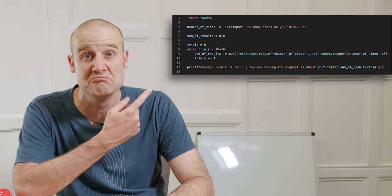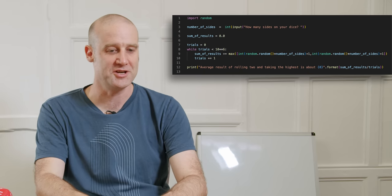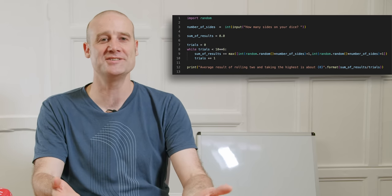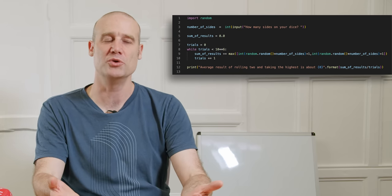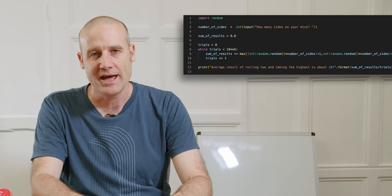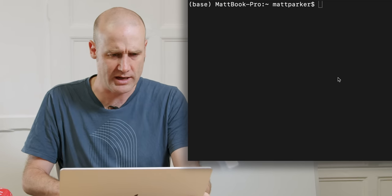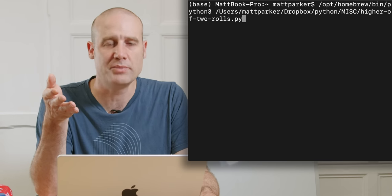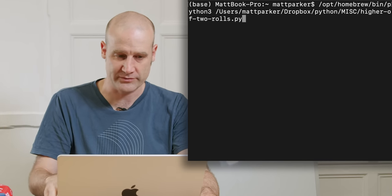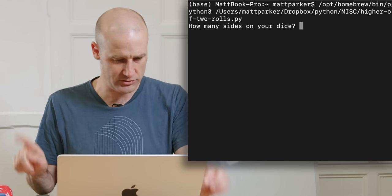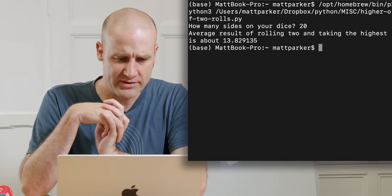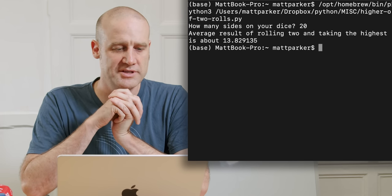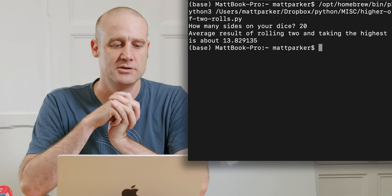My zeroth step was just to simulate it in software. I put together some terrible Python code. It just rolls two dice a million times, keeps track of the maximum value, adds them up, and gives you the average at the end. Running that for the D20, doing a million rolls, the average result of rolling two and taking the highest is about 13.829.